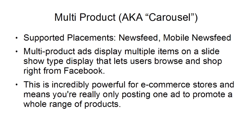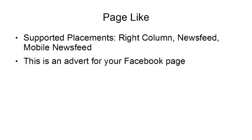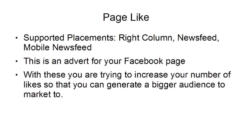With multi-product ads, you're really only posting one ad to promote a whole range of different products. It's also good if you've got a bricks-and-mortar store — you can use this type of advertisement to highlight and showcase your products. Then there's page like. The supported placements are the right column, the news feed, and the mobile news feed. This is basically an advert for your Facebook page. What you're trying to do is increase the number of likes so you can generate a bigger audience to market to. This is really part of a long-term strategy — you're probably not going to make any direct sales from this, but you are going to get more fans and grow your audience slowly over time.